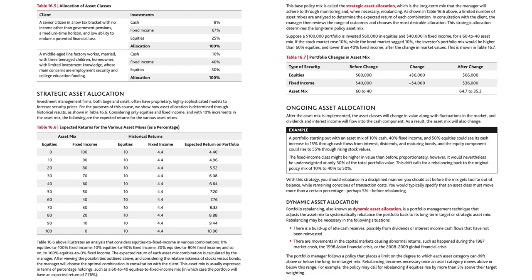Ongoing asset allocation: after the asset mix is implemented, the asset classes will change in value along with fluctuations in the market, and dividends and interest income will flow into the cash component. As a result, the asset mix will also change. For example, a portfolio starting out with an asset mix of 10% cash, 40% fixed income, and 50% equities could see its cash increase to 15% through cash flows from interest, dividends, and maturing bonds, and the equity component could rise to 55% through rising stock values. The fixed income class might be higher in value but would nevertheless be underweighted at only 30% of the total portfolio value. This drift calls for a rebalancing back to the original policy mix of 10% to 40% to 50%.